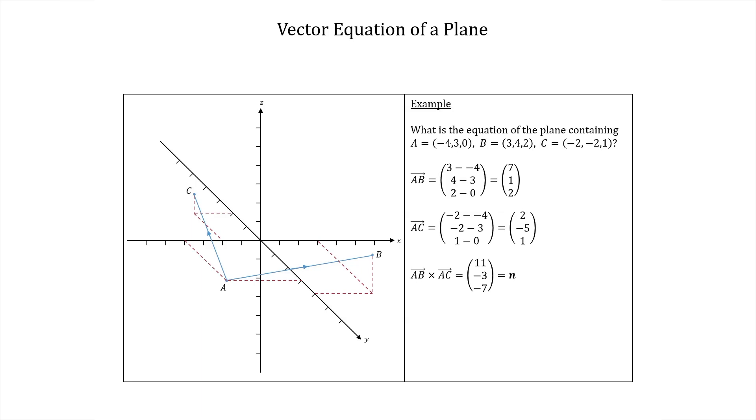To find the equation though we also need p, our varying vector, and some specific vector which goes from the origin to the plane.